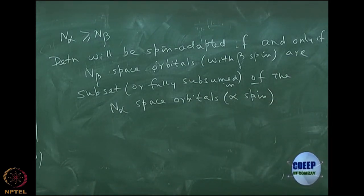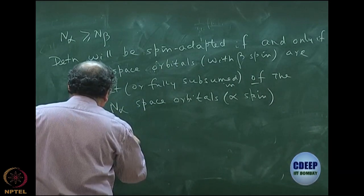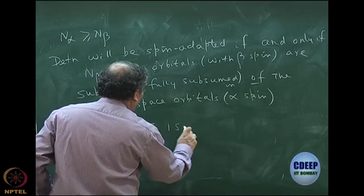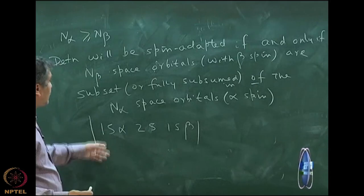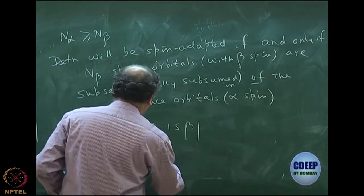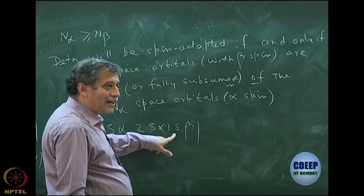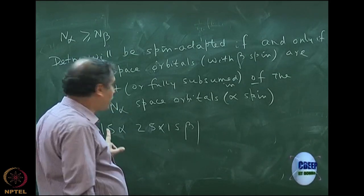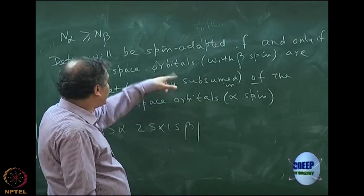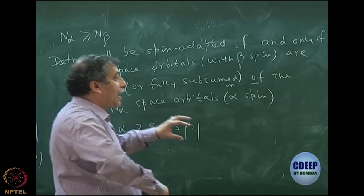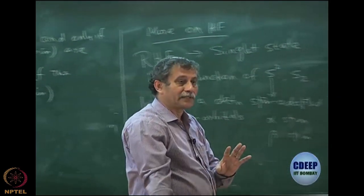For example, consider a 3-electron determinant: 1s-alpha, 2s-alpha, 1s-beta. Does this satisfy the condition? Yes, because the space orbital for the beta part is 1s, which is completely contained in the alpha set {1s, 2s}. So this ticks the box — 1s is a subset of the alpha space orbitals, meaning the n-beta space orbitals are already contained in the n-alpha list.